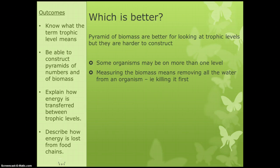So which is better? Well, pyramids of biomass are better for looking at trophic levels, but they are harder to construct. This is because some organisms might be at more than one level, and measuring the biomass means removing all the water, so we would have to kill the things. So if we're looking at food chains that involve human beings, it's highly unethical to start thinking about biomass.